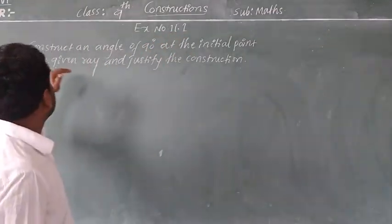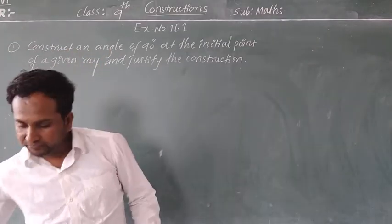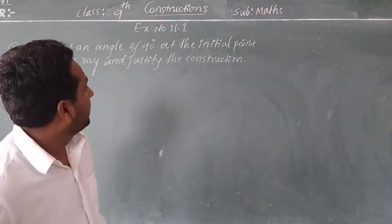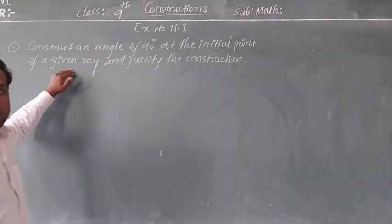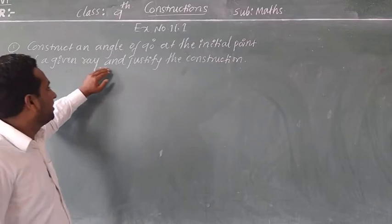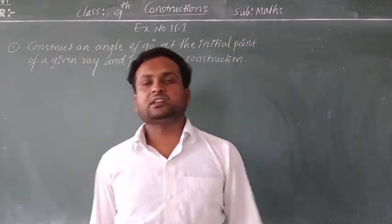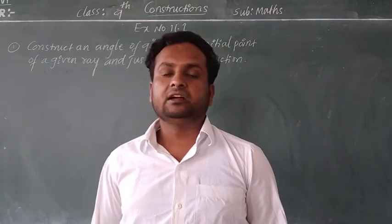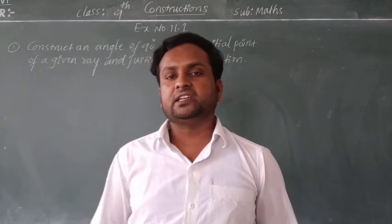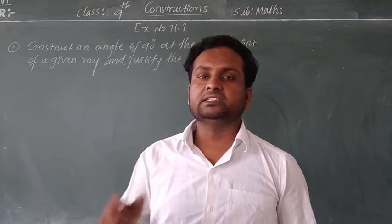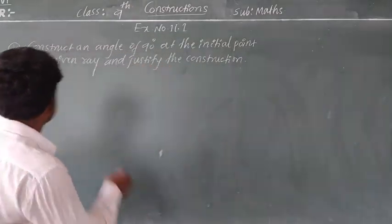First, we have the given problem: construct an angle of 90 degree at the initial point of the given ray, and justify the construction. You have to construct the 90 degree angle at the given line segment and justify the answer — how it is 90 degree. So first, you have to draw the solution.